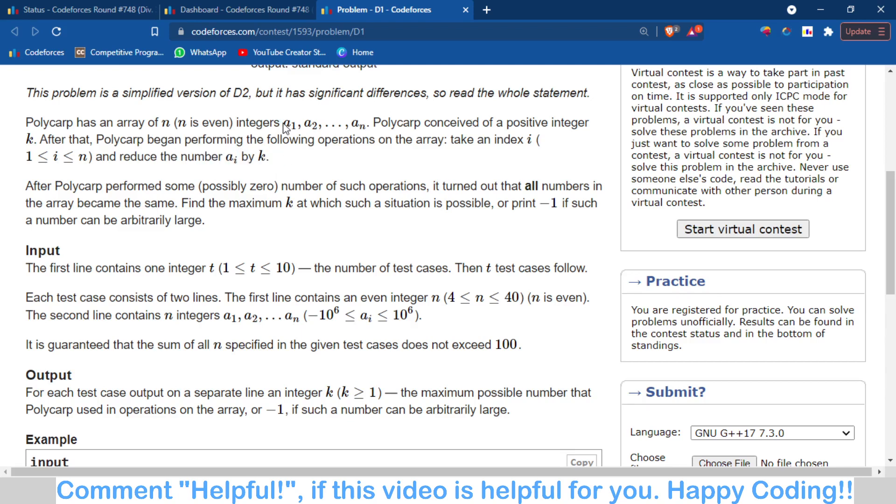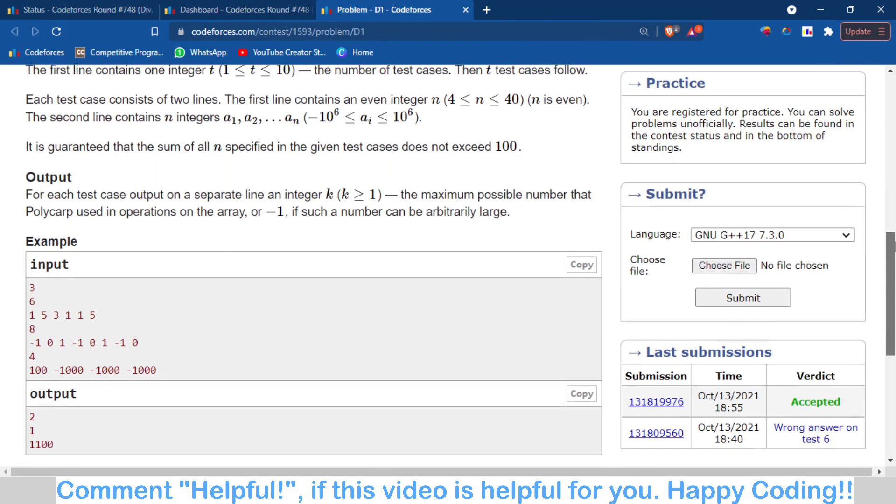Basically we can do all the numbers k times minus, and by doing this operation we have to make all the numbers of this array same. We have to make all the elements of this array same.